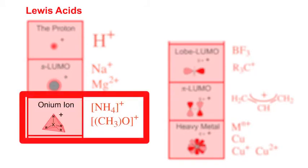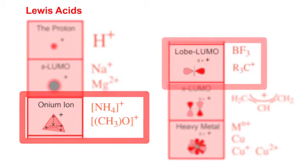Next we have the onium ions. These are species with hypervalent atoms such as nitrogen in the ammonium ion NH4+ and oxygen in the trimethyl oxonium ion.